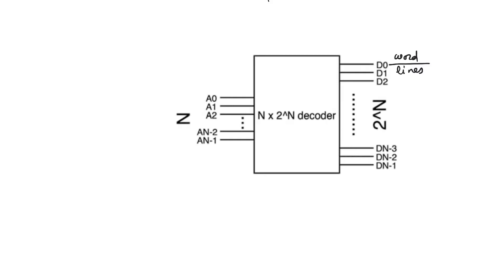It's also important because whereas word line delay is large, there are things we can do about it. The row decoder itself is an active element — it has active drive — and therefore we can do a lot of smart things about designing and sizing the row decoder so that we minimize the word line delay.